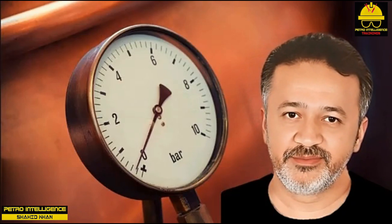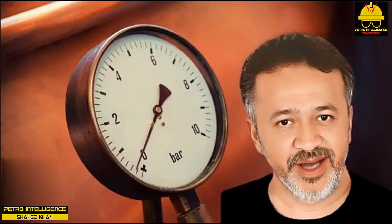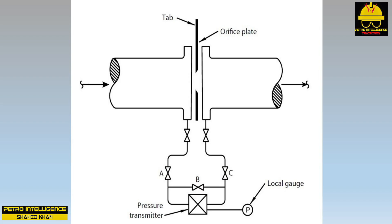Flow indication: the standard method of measuring flows in a process plant is by use of the orifice plate and orifice flanges. We rarely measure flows directly — more commonly we measure the pressure drop across an orifice plate. This pressure drop is due to the increase in kinetic energy of a fluid as it accelerates through the small hole in the orifice plate; the energy providing the increased velocity comes from the pressure of the flowing fluid.